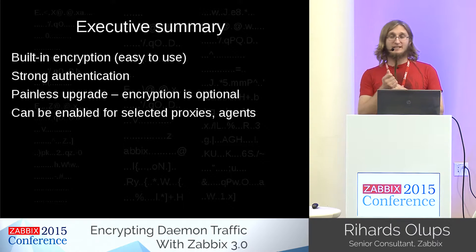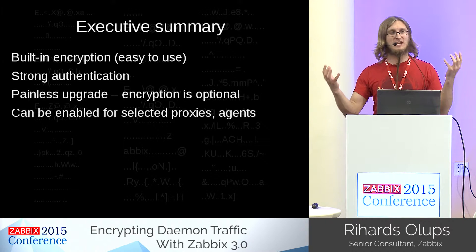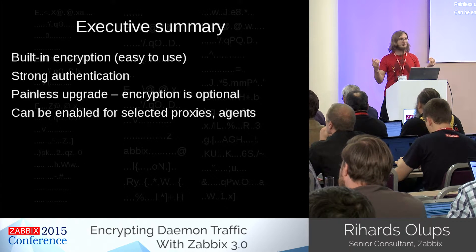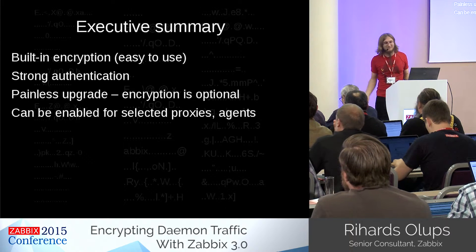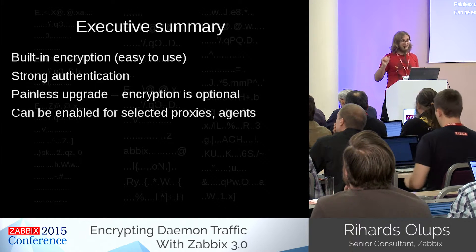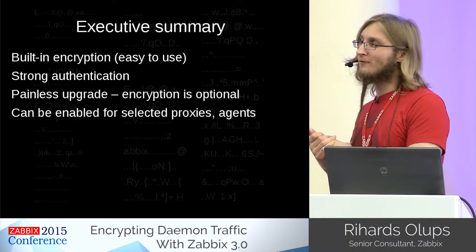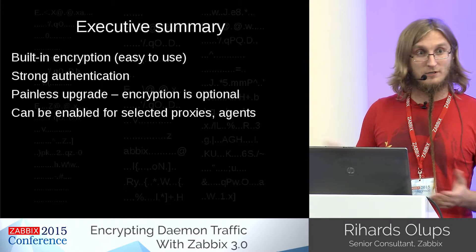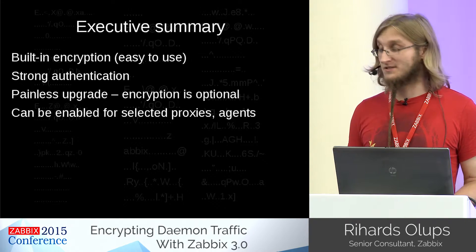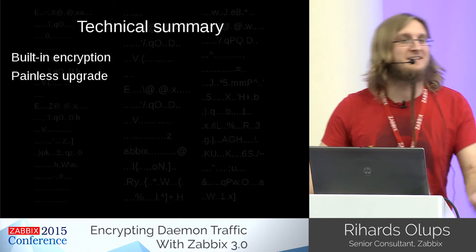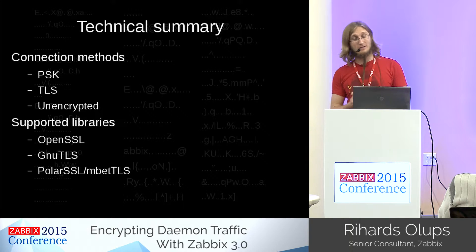Summary: encryption will be built-in and easy to use, providing strong authentication. Currently, having two active agents accidentally configured with the same name causes confusion — with this feature that should be much harder. Upgrading is easy because everything keeps working as before. Going to encryption is easy — you can do it one by one or in groups, very selectively, even just for that one remote proxy or hosts monitoring financial systems.